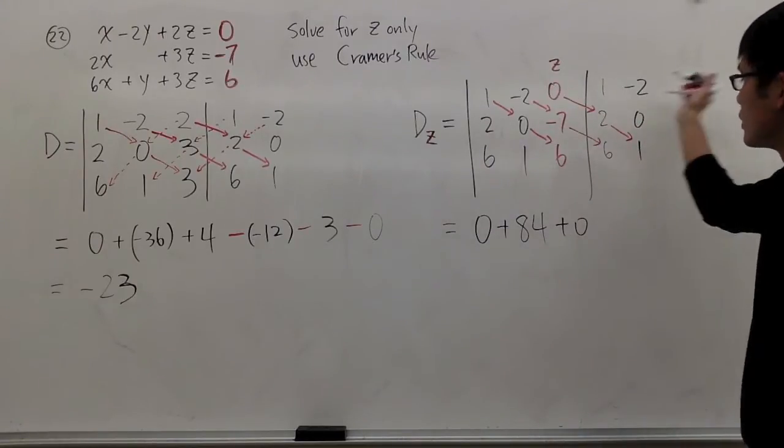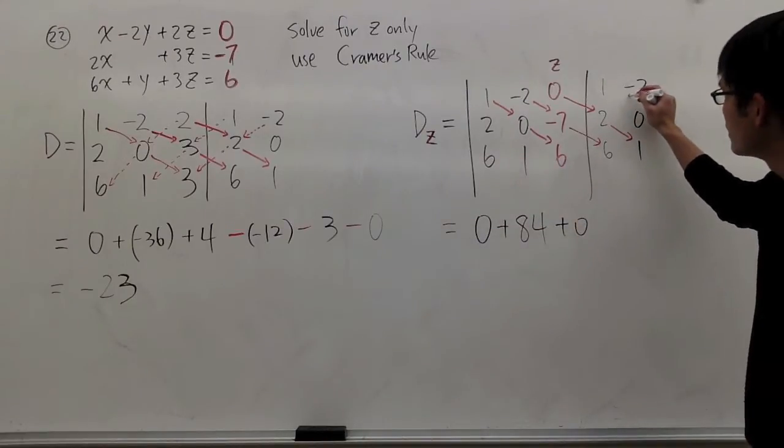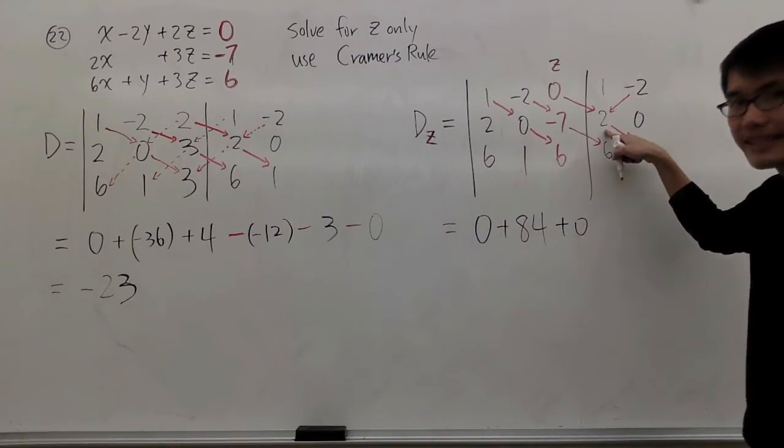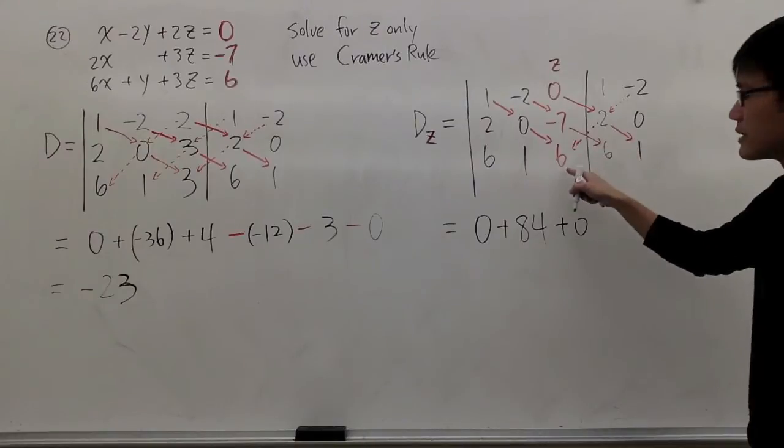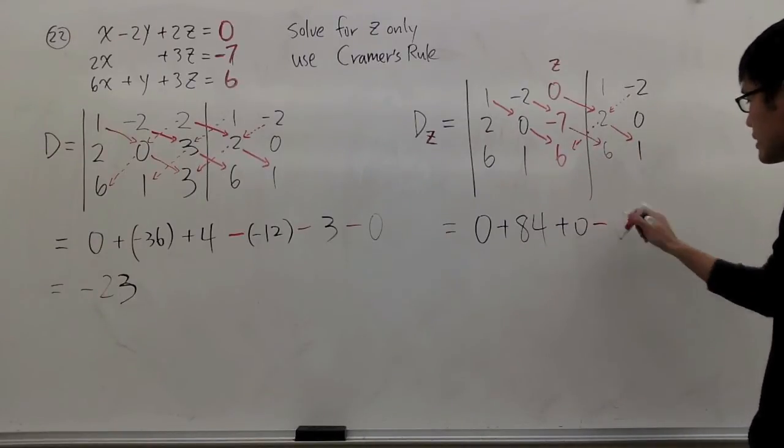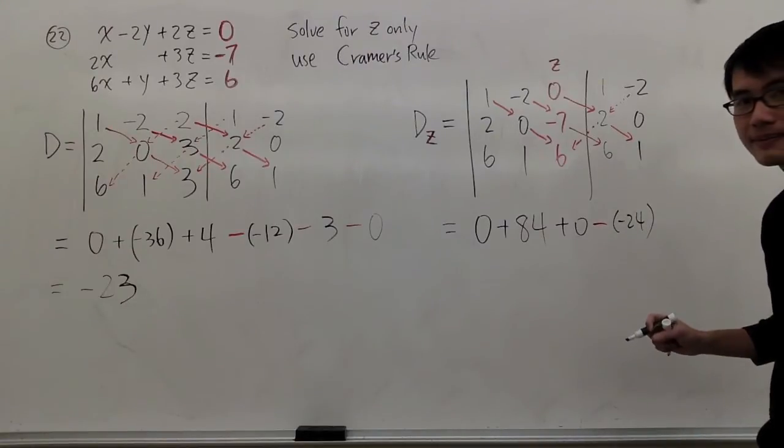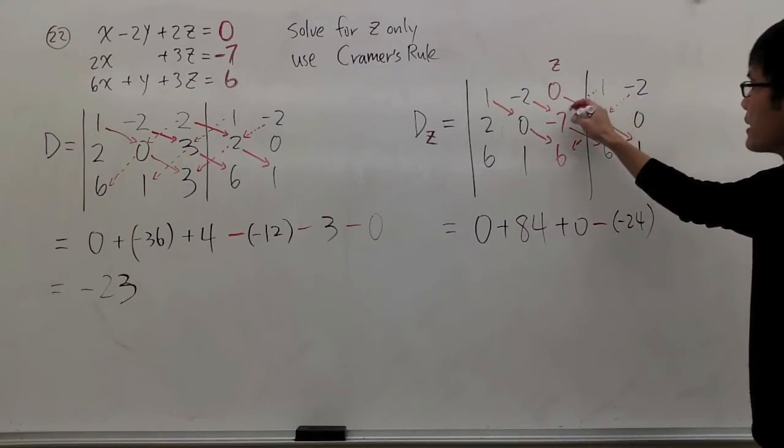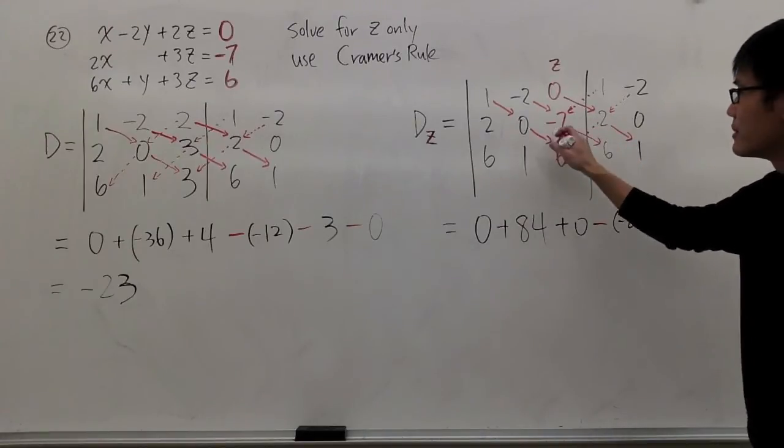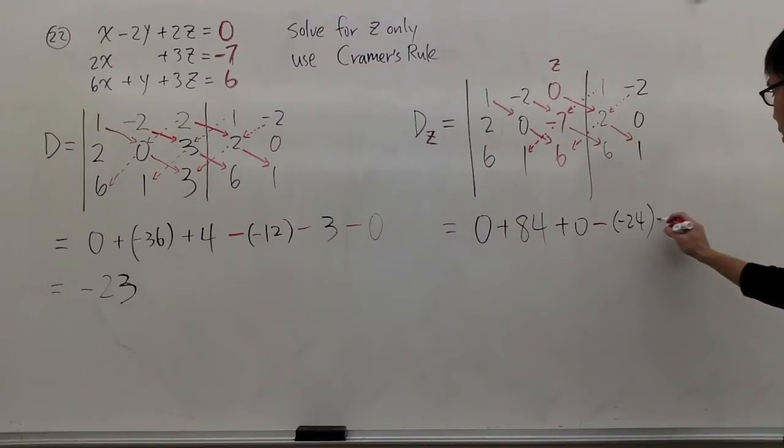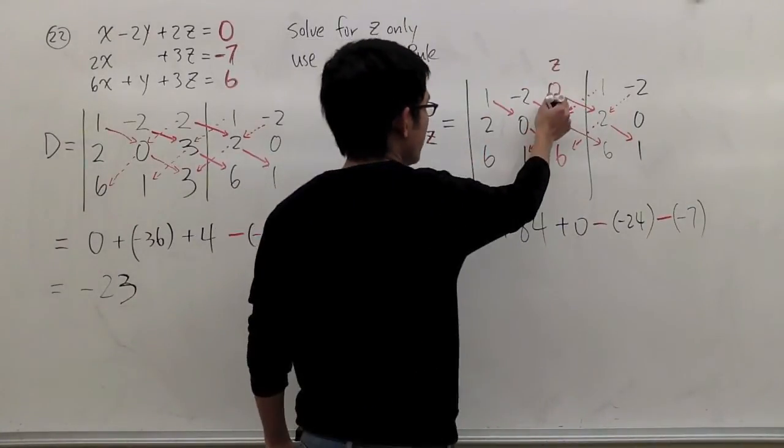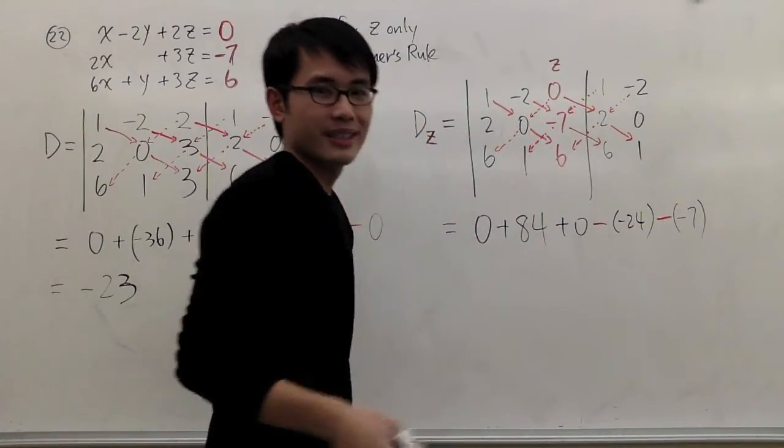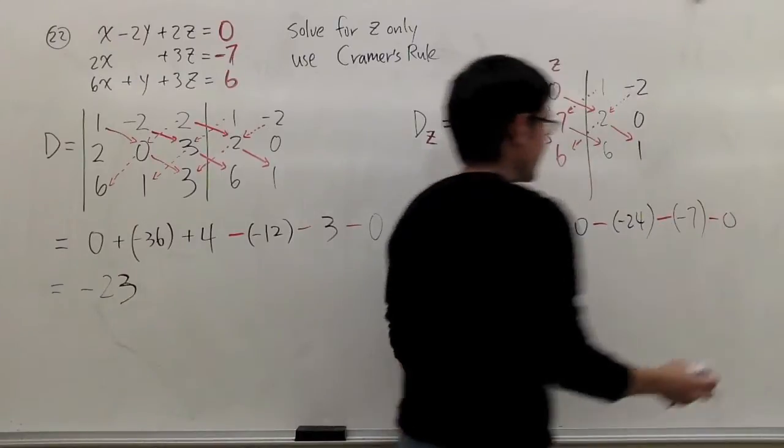We finish with these diagonals. Go the other way. Take negative 2 times 2, which is negative 4, times, let me just restart like this. Negative 4 times 6 will be negative 24. So we're going to subtract negative 24 like that. And we'll do 1 times negative 7, which is negative 7, times another 1, which once again is negative 7. But we're subtracting a negative 7 like that. And the last one, take 0 times 0, which is 0, times another 6 is 0, minus 0 like that.